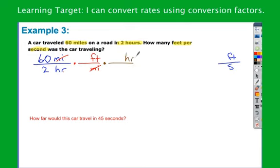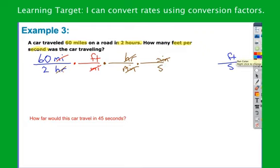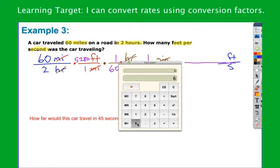Next, deal with the time. I cancel out hours by putting it in the numerator since it's in the denominator. If you don't know how many seconds are in an hour, that's okay — we know how many minutes are in an hour. I can use one more conversion factor: put minutes in the numerator to cancel it, then replace with seconds. Now feet is the only thing not crossed out on top, and seconds is the only thing not crossed out on the bottom. Fill in numbers: one mile is 5,280 feet; one hour is 60 minutes; one minute is 60 seconds. Multiply the tops: 60 times 5,280 times 1 times 1 gives 316,800.